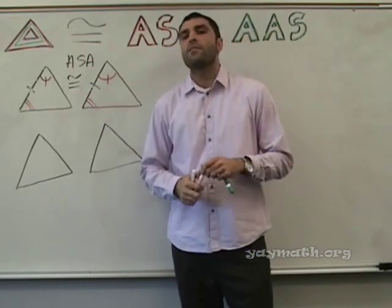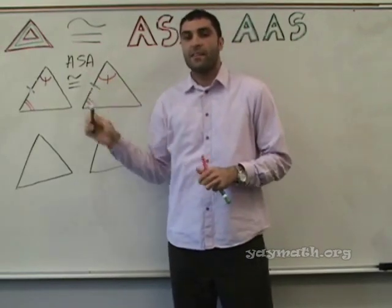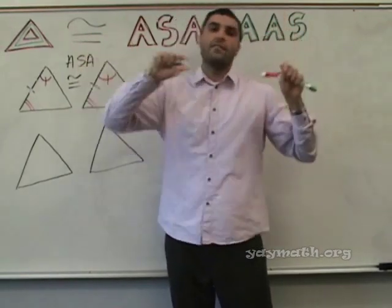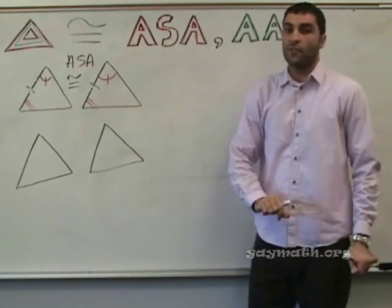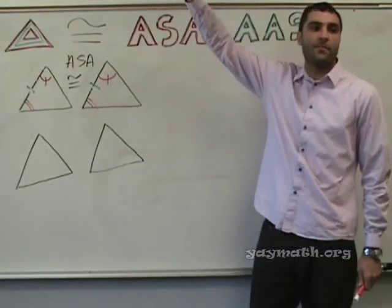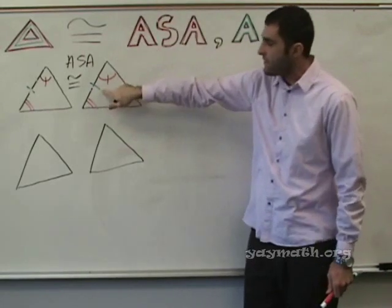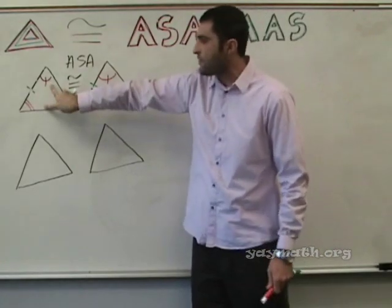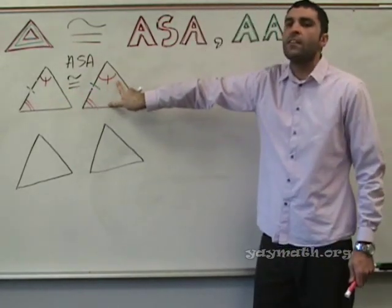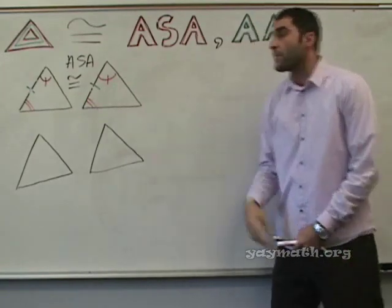Well, any triangles can be congruent with ASA as long as they have the ASA relationship. As in, an angle congruent, a side congruent, and another angle congruent. And just like it's spelled, this is something that students miss. Just like it's spelled, the S is between the two angles. So check it out. See how the green one is between the two angles here and here? That's ASA. Just like it's spelled. Now we're gonna do another one.